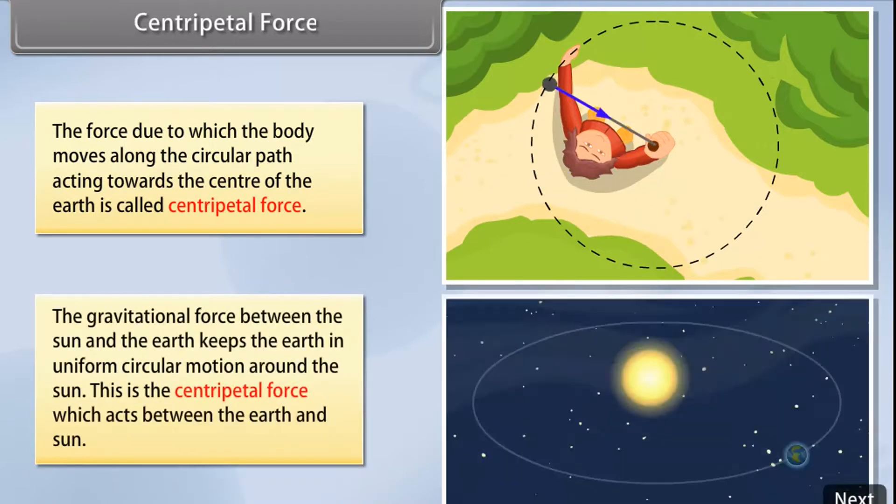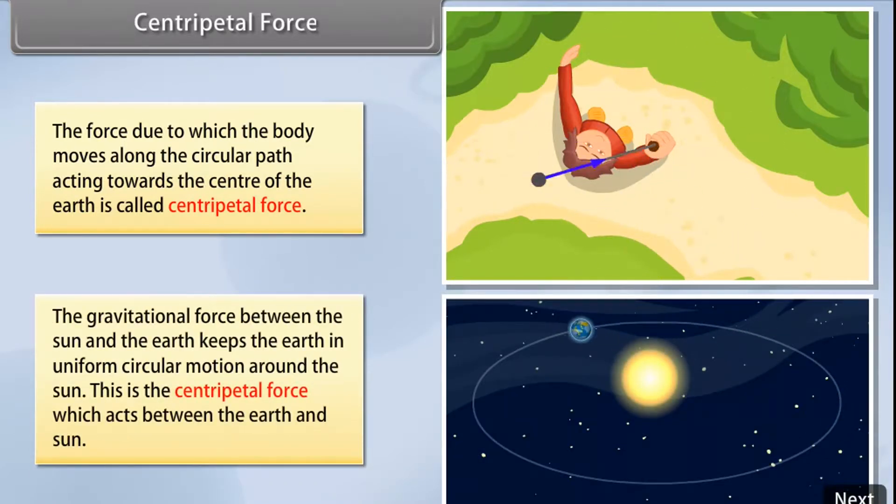The gravitational force between the sun and the earth keeps the earth in uniform circular motion around the sun. This is the centripetal force which acts between the earth and sun.